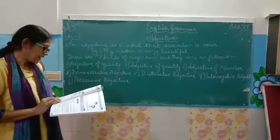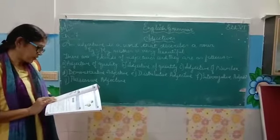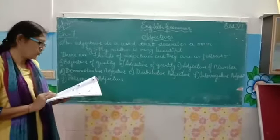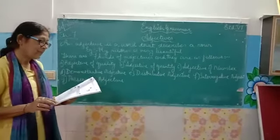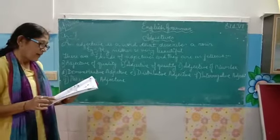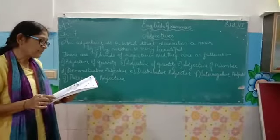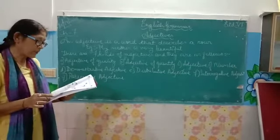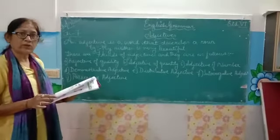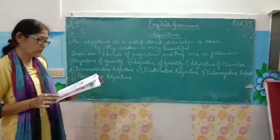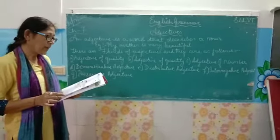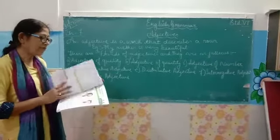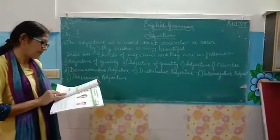Interrogative adjectives answer questions. Example: which book do you like? Possessive adjectives always come before the noun and they answer the question 'who.' Example: we love our parents. The colour of our flock is red.